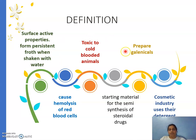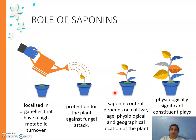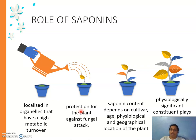Another property of saponin is its chemical structure, which is steroidal in nature. Because of this steroidal nature, saponin is used as a starting material for the semi-synthesis of steroidal drugs. Regarding the function of saponin in plants: saponin also has a role in plants. It is present in organelles with very high metabolic turnover, making it a physiologically significant constituent of the plant. Its main function is to protect the plant against fungal attack.